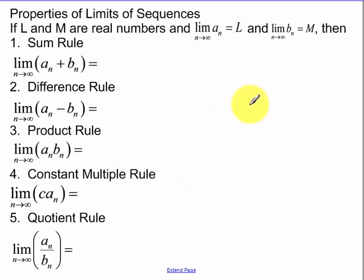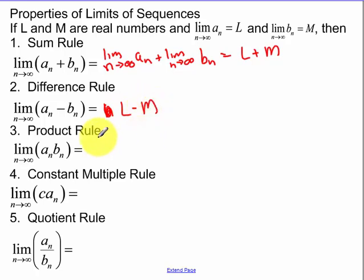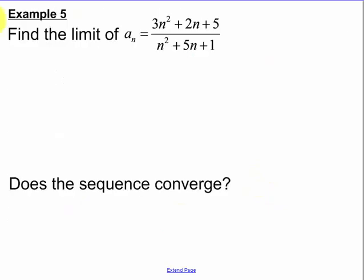Okay. Some rules. L and M are these values. So basically, look at it almost like distribution. You can distribute your limit through, and it turns out to be L plus M. Same thing can apply with all these. L minus M. L times M. C times our limit was L. And then we have L over M, assuming that M cannot be equal to 0.